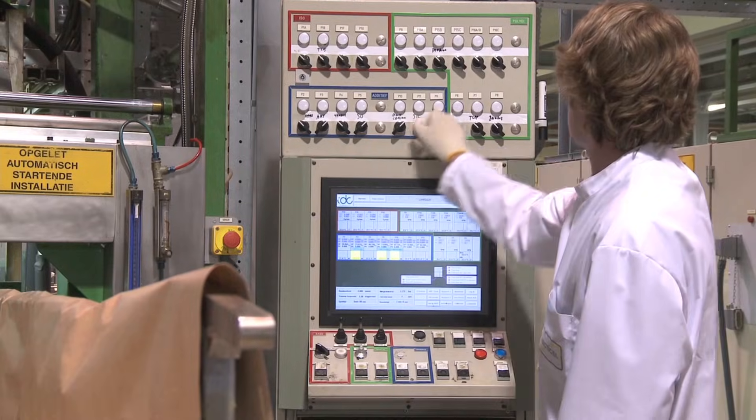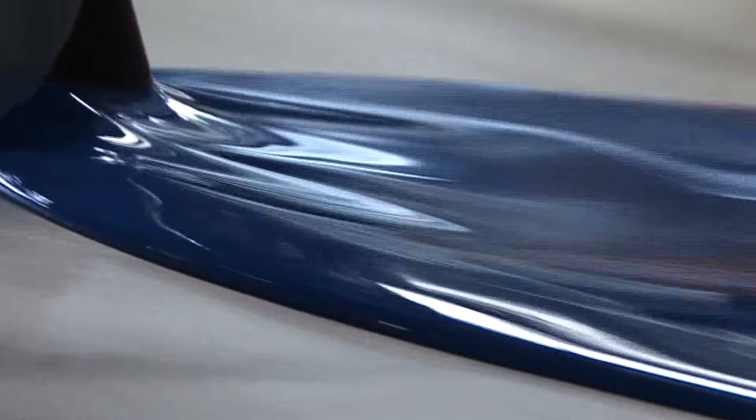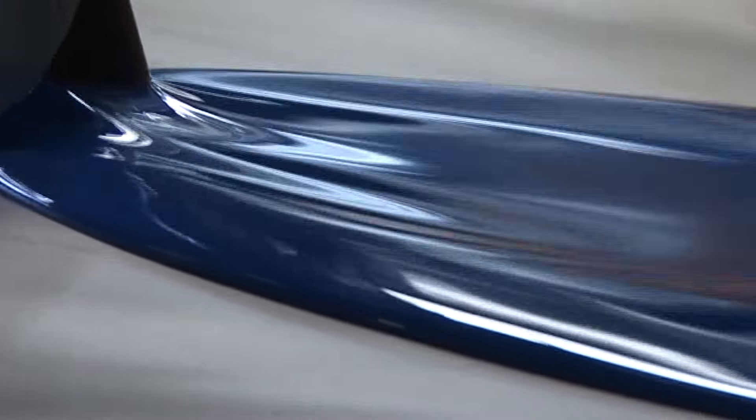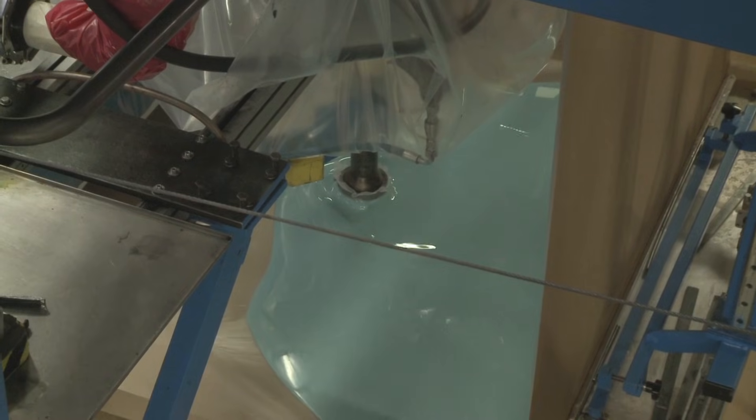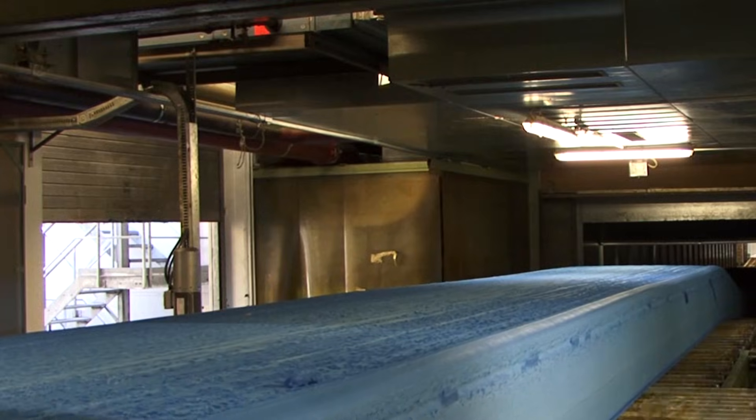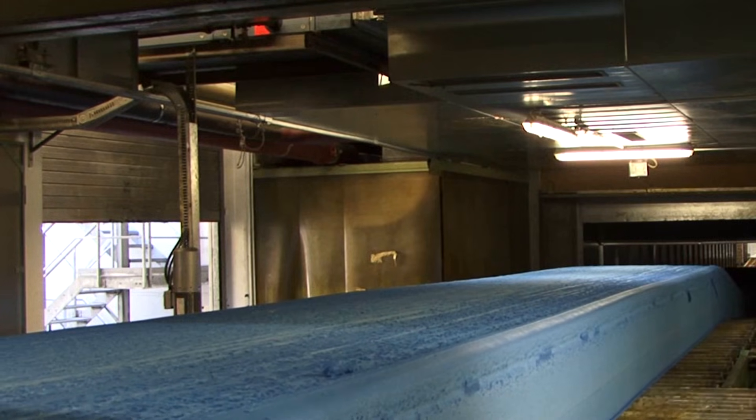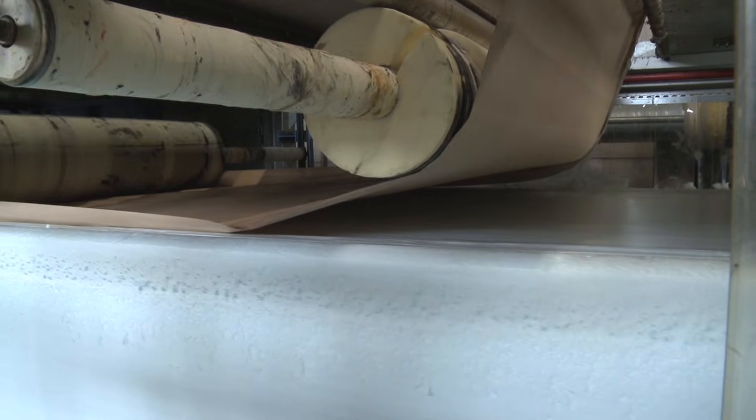The mixing head is where the real production process begins. Isocyanates, polyols, pigments and other additives are mixed together in the mixing head. This is poured onto a rolling conveyor belt where it starts to foam. It forms a foam block along the conveyor belt.